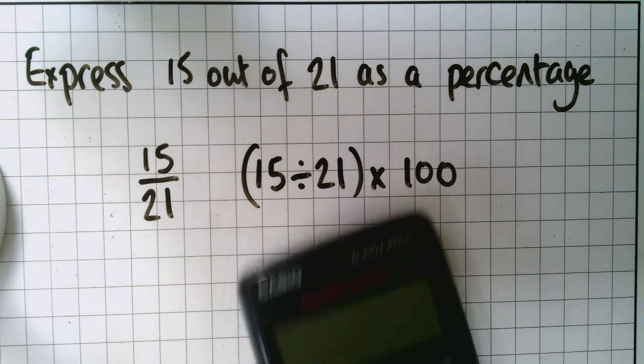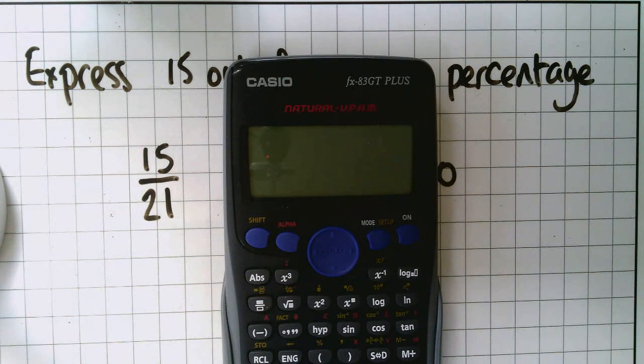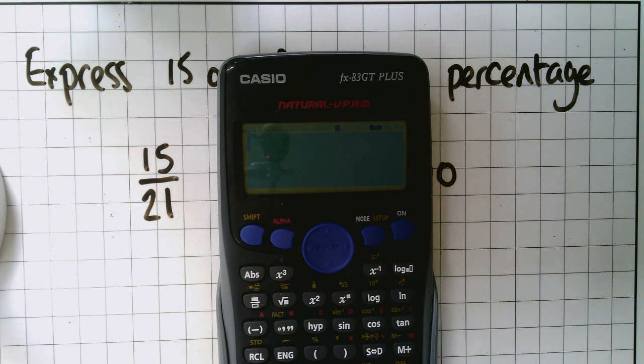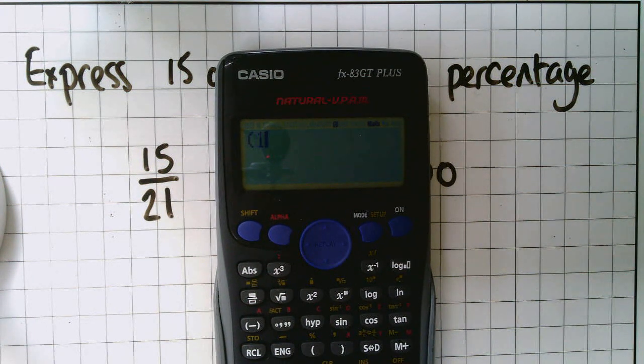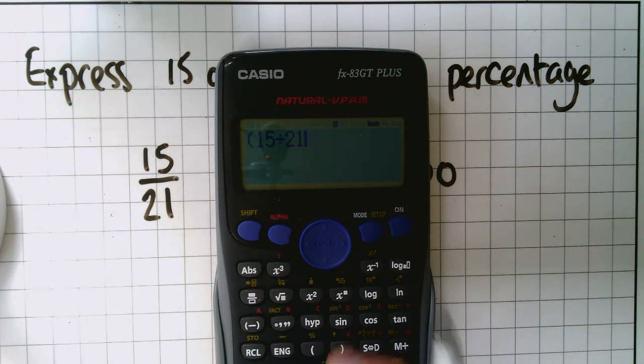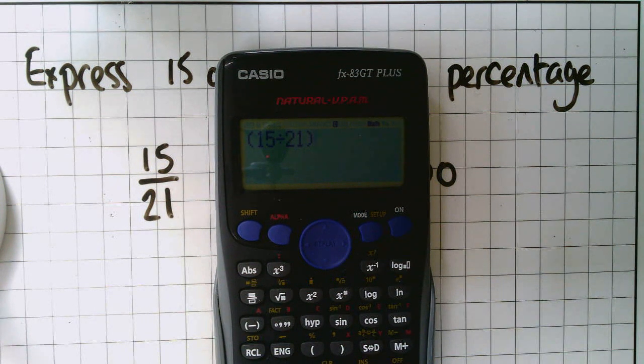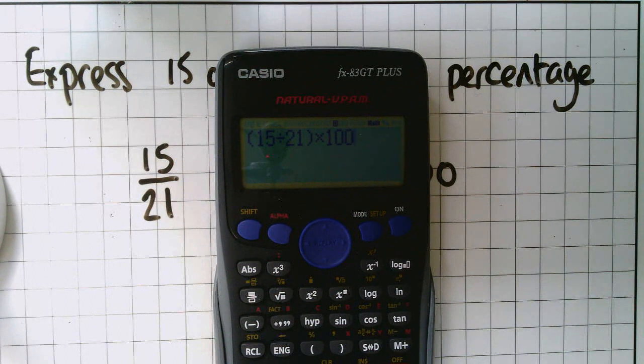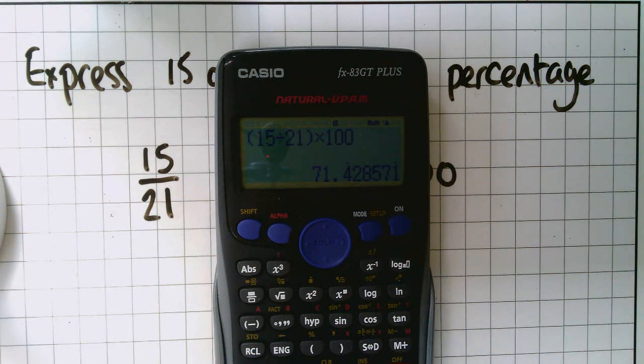So get your calculator, turn it on, you're going to put in 15 divided by 21 and multiply that by 100 to give you an answer of 71.428571 and that's recurrent.